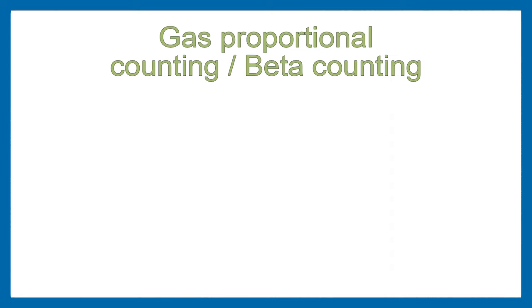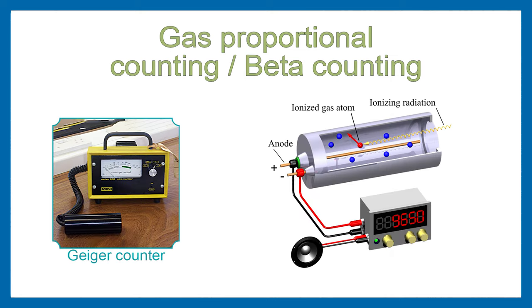Back then, he and his team used the radiometric method of gas proportional counting, also known as beta counting. Using a Geiger counter, you count the emitted beta particles that are products of radiocarbon decay.